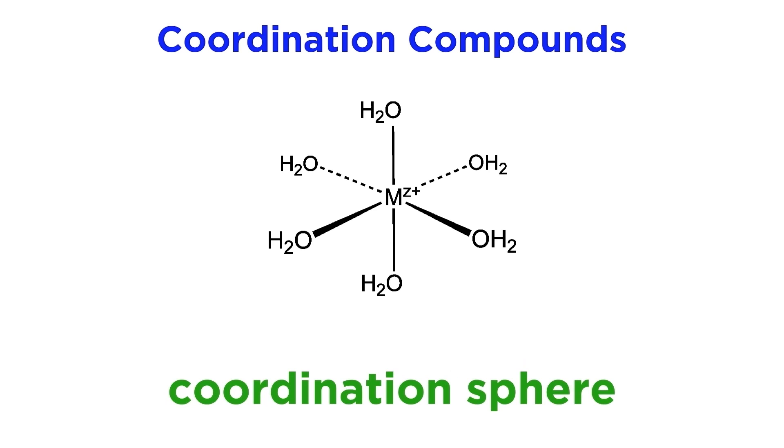If we want to show the coordination sphere, or the metal ion plus its ligands, using our standard notation, we will do this by placing brackets around the complex, as is shown here. Outside of these brackets will be listed any formal charge exhibited by the complex.